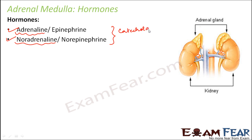Why are they called catecholamines? Because they are amines — they have amine groups in them — and they also have a catechol group attached to each of them. Similar to how you have an alkyl group or a carboxyl group, you have a catechol group attached to the structures of adrenalin and noradrenalin, and that is why they are called catecholamines.